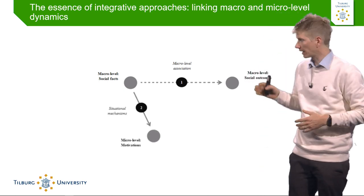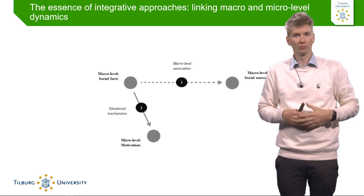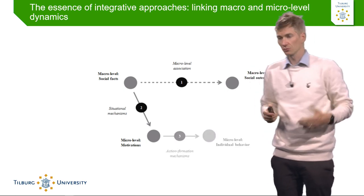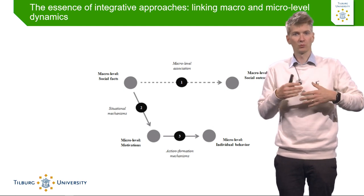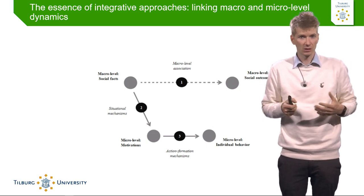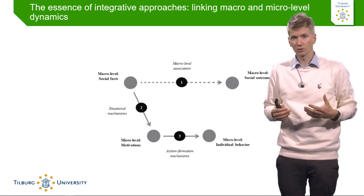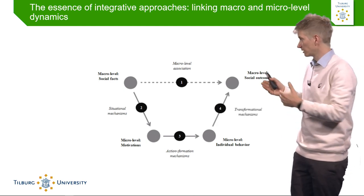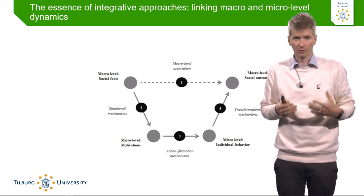We do that first by looking at the situational mechanism — how macro level changes affect individual motivations. How do changes in the environment impact micro level motivation? Next, micro level motivations lead to an action formation mechanism, meaning people also change their behaviour. There is a change in terms of agency and psychology: you have the motivations — that's the psychology — and then certain behaviour change happening among people. That significantly affects the macro level again through transformational mechanisms, whereby when many people change their individual behaviour, you see a certain outcome at the macro level.